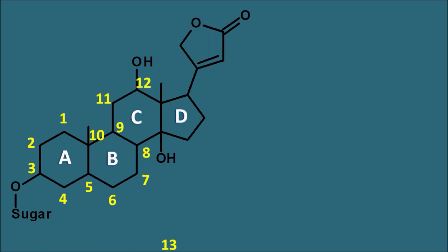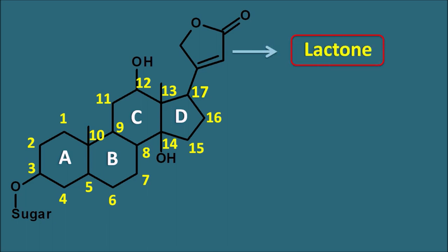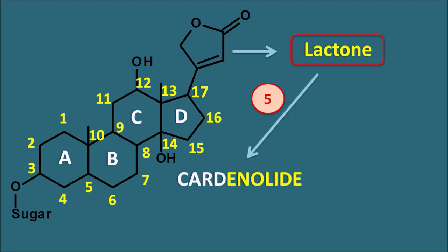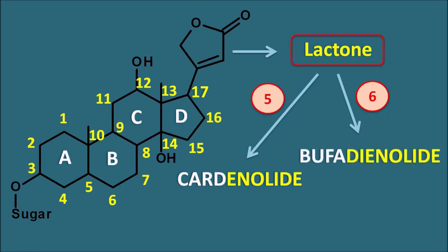Continuing the numbering from 11 through 17, the cardiac glycosides have a 17-carbon steroid nucleus which is attached with a lactone ring. This lactone may be either a 5-member ring system, in which case we call them cardenolides, or a 6-member ring system, called bufadienolides. So cardiac glycosides can be classified into cardenolides and bufadienolides based on the size of the lactone ring.